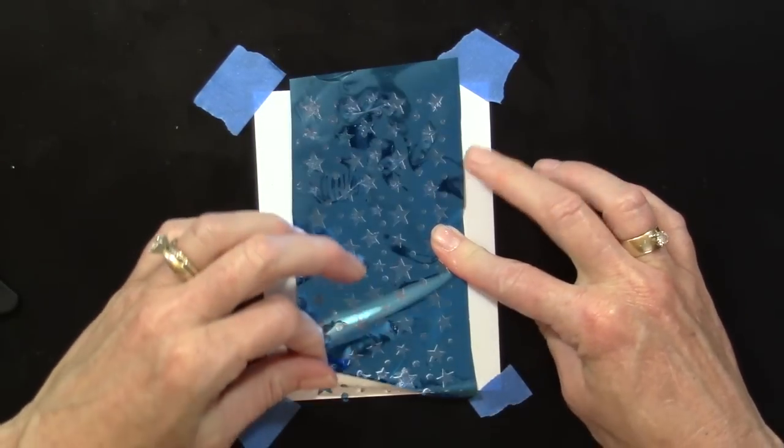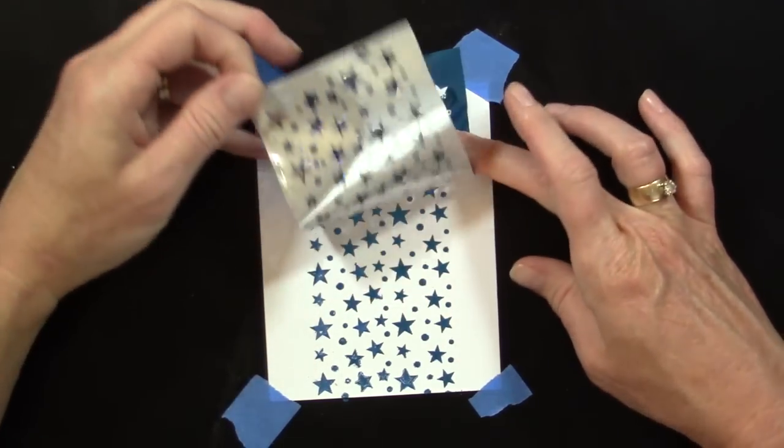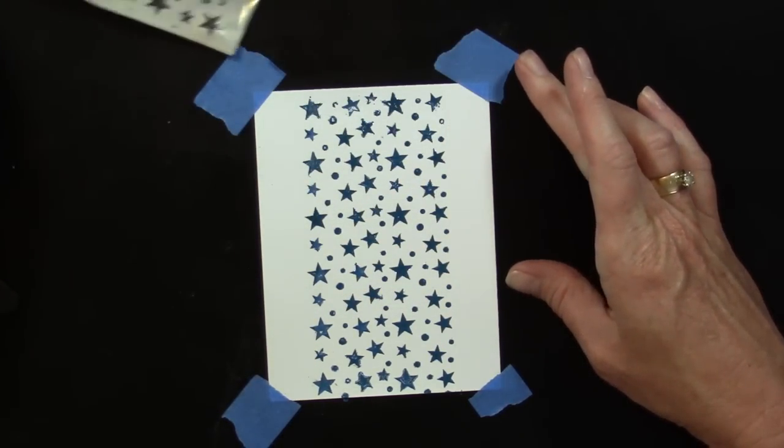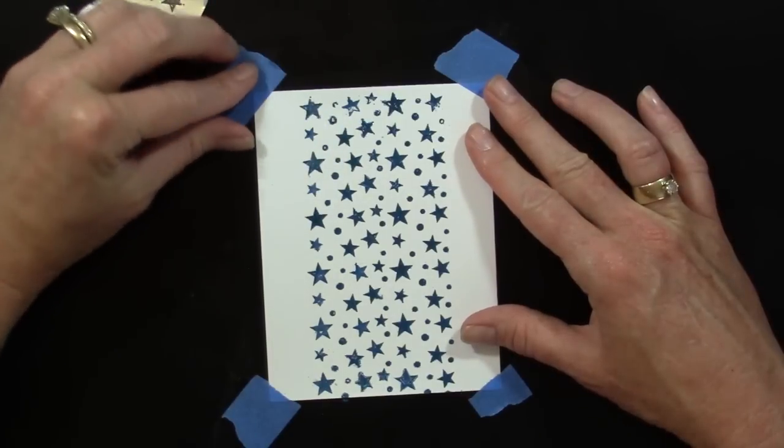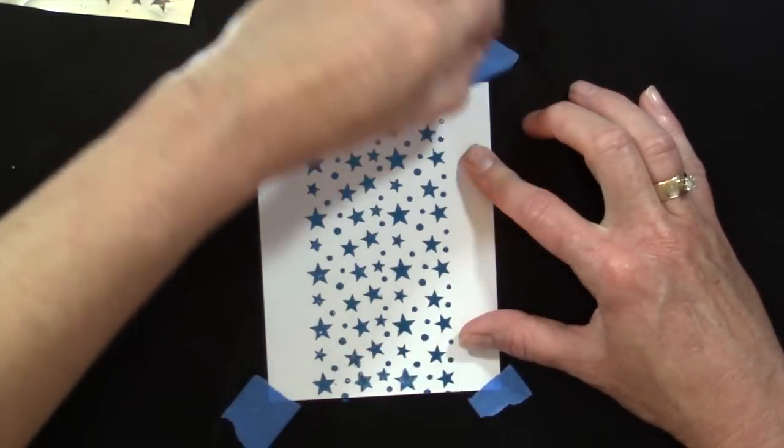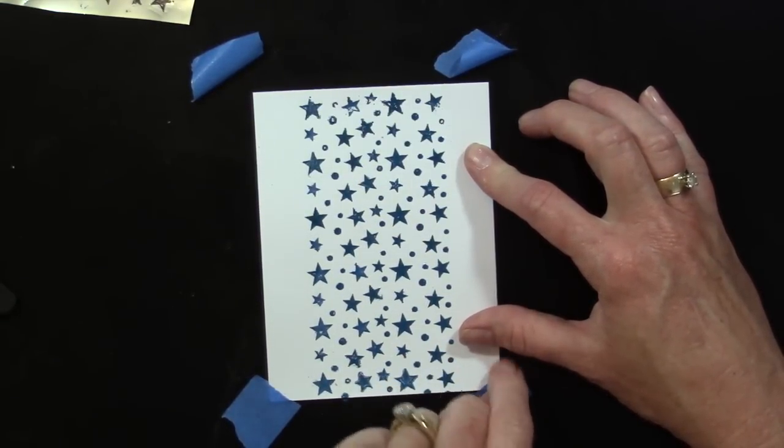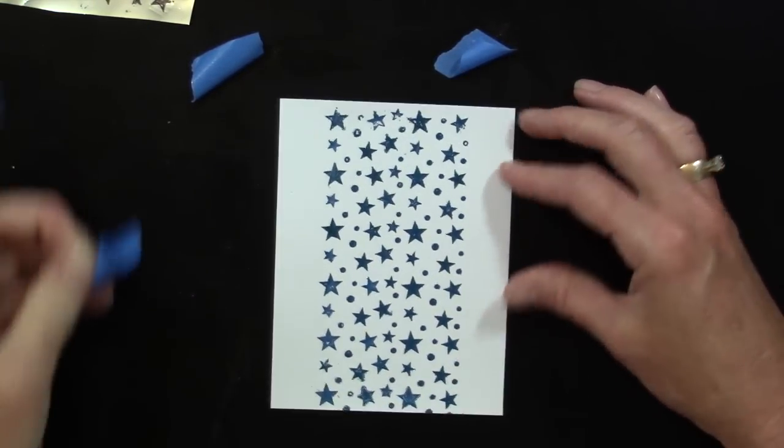Then slowly lift the deco foil straight up to reveal your stenciled piece. You can remove your masking tape from the work surface and remove the stencils. Your stenciled piece is complete.